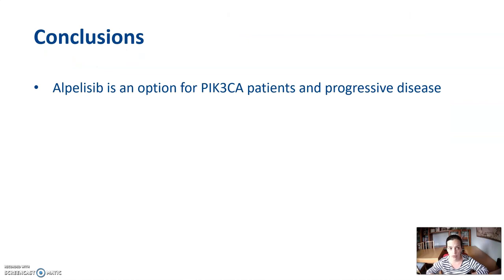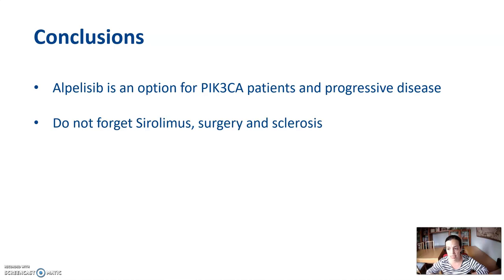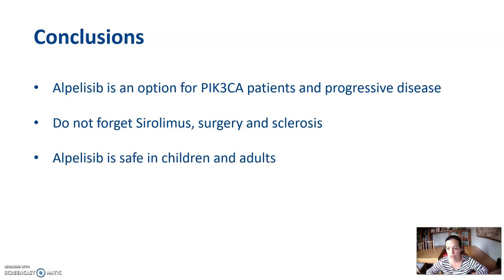To conclude, alpelisib is another option in the management of PIK3CA patients that present progressive disease despite other treatments. This does not mean that every patient on sirolimus should change to alpelisib if they are responding. And of course, we cannot forget about surgery and sclerotherapy. With the initial data that we have, we can establish that alpelisib is safe in children and adults, although there is a risk of mild side effects.